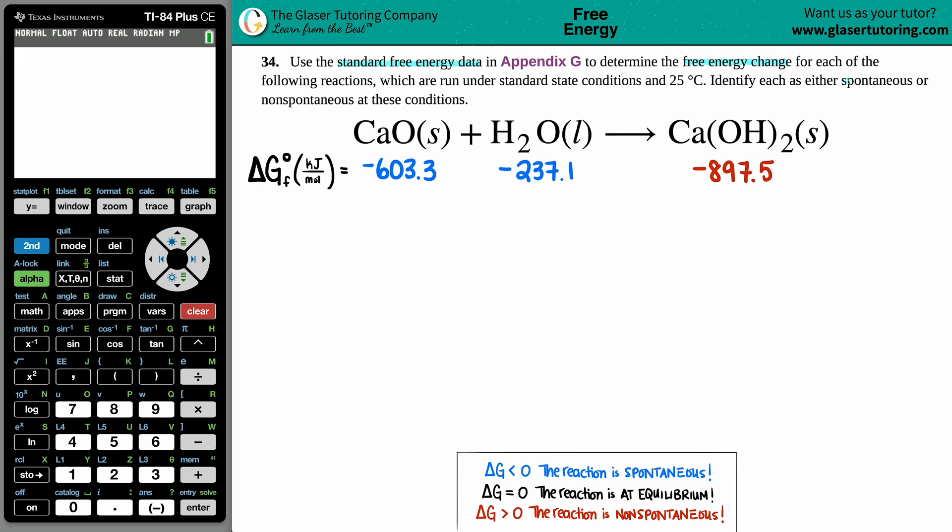Okay, so we have our equation: CaO solid plus H2O liquid yields Ca(OH)2 solid. Now we want to find that free energy change, that is delta G—G for Gibbs free energy. Gibbs was the scientist who came up with this energy amount.